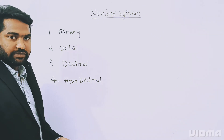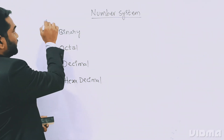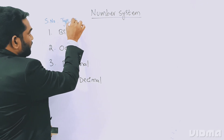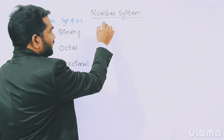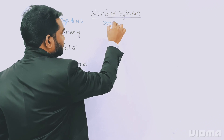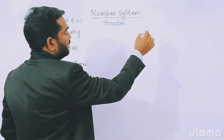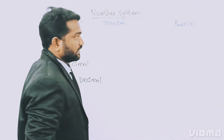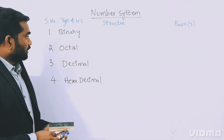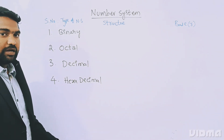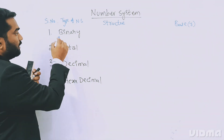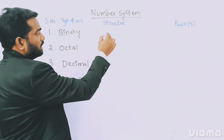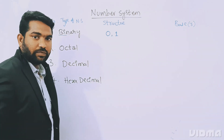Let us understand the base and structure of each number system. I am writing a table with serial number, type of number system, structure, and base. For binary number system — the name indicates 'bi,' meaning two. In binary system we have only two values: zero and one.